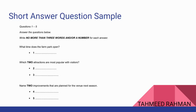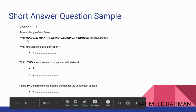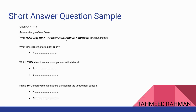It usually comes with an instruction like this: write no more than three words and/or a number for each answer. So the questions are given, and based on what you read or listen to in the listening section, you must answer within three words or using a number. Note that three words and a combination of a number is also allowed.